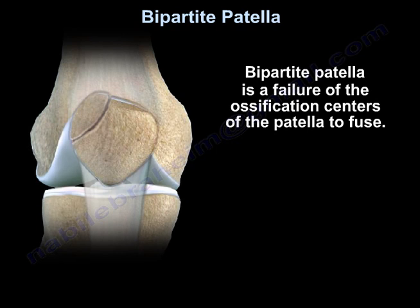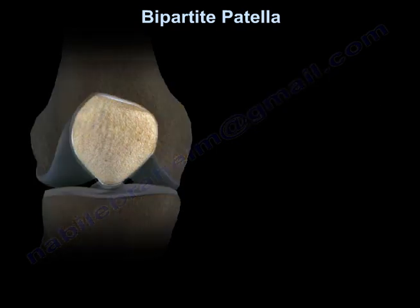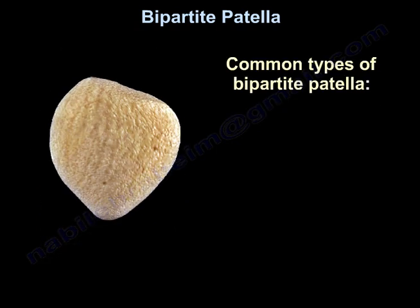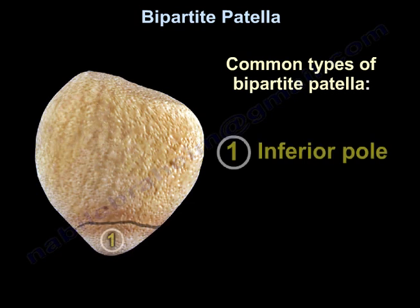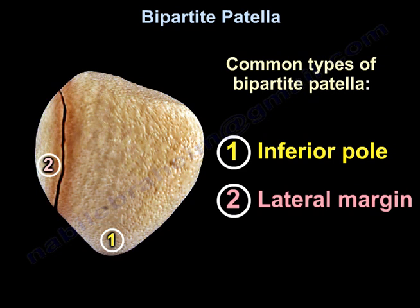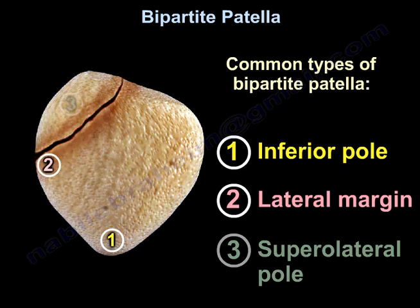What are the common types of bipartite patella? The three types are: at the inferior pole, at the lateral margin, and at the superolateral pole.